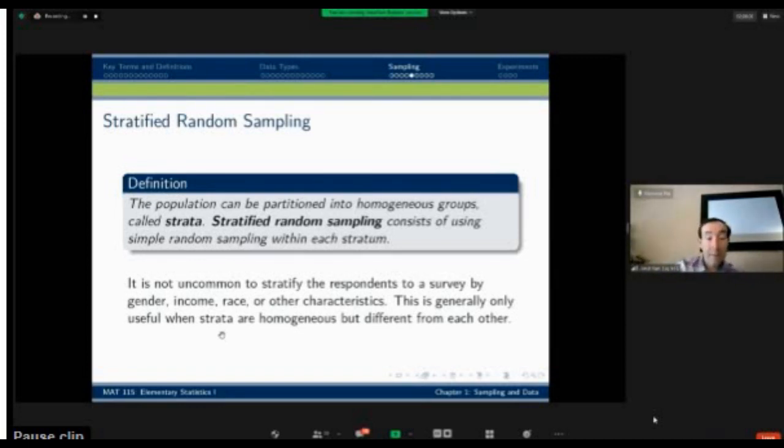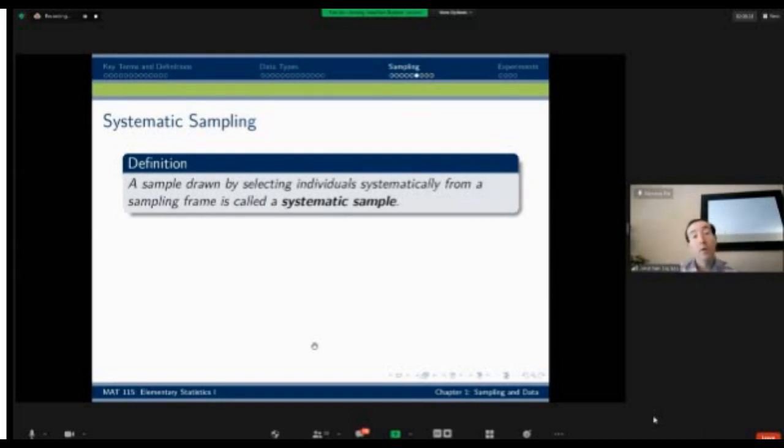It's generally only useful when you can separate them into groups so that the groups themselves are the same based on that characteristic of stratification. But from one group to the next, you have differences. For instance, if I were to stratify based on income, I would want no overlap between income group A and income group B. But I would want everyone in group A to have a roughly similar income level, and everyone in group B to have a roughly similar income level. That's what stratification is doing.